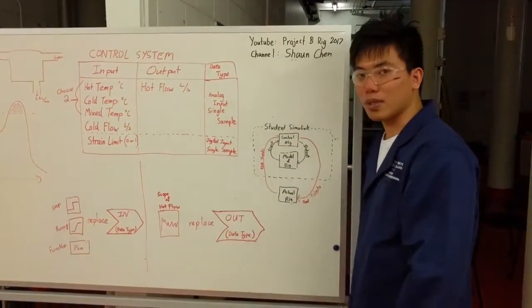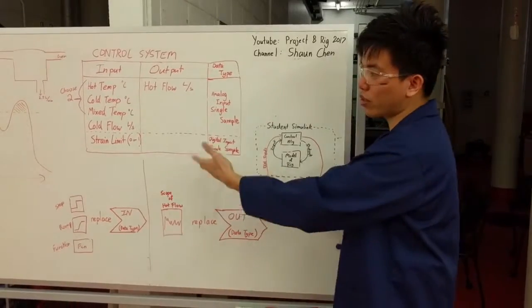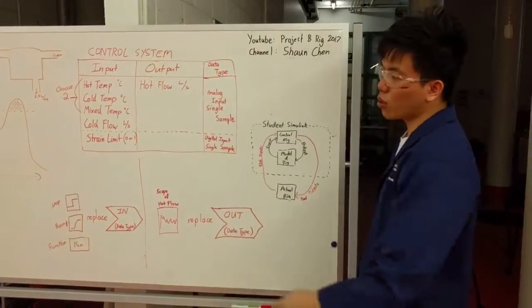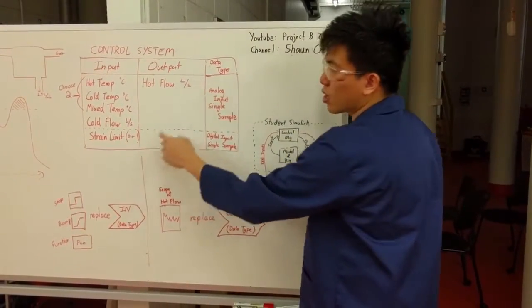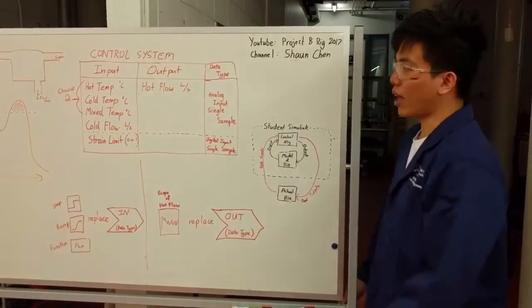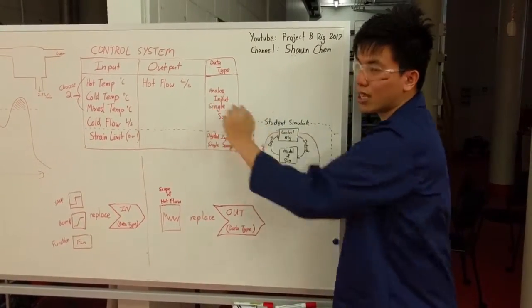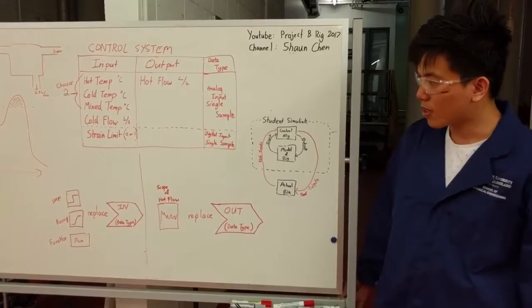You'll also get the cold flow in liters per second, that's the flow regime that we give you so we know the flow we'll give you that. And you also have an input of zero or one signal for a strain limit. In the output you have a hot flow, you're controlling the hot pump and that's in liters per second as well, and that's the only output you'll be giving us.